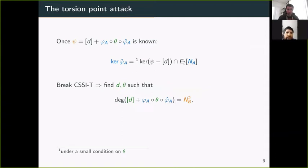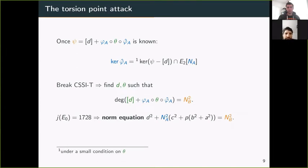Breaking the CSSI problem reduces to finding d and θ such that the degree of d + φA θ φ̂A equals Nb². When the starting curve has j-invariant 1728, this leads to a particular norm equation: d² + Na²(c² + p(b² + a²)) = Nb². We can compute a solution when Nb > p·Na. This has no impact on SIKE because in SIDH, Na and Nb are roughly the same size, both roughly √p. So that's still secure.